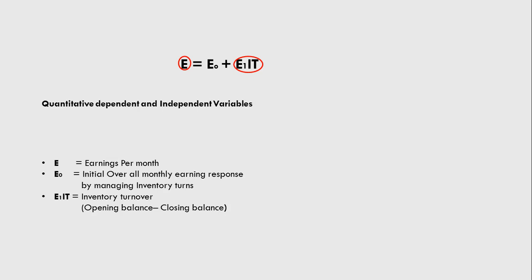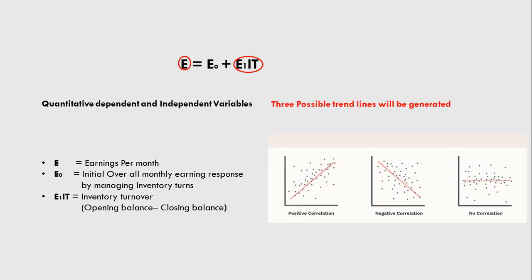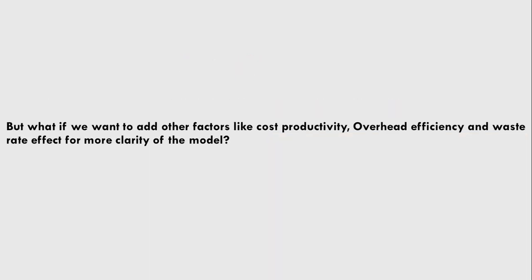E₁IT is basically inventory turnover. We can calculate turnover by negotiating opening balance and closing balance. We would have three expected trend lines: positively correlated, negatively correlated, or no correlation at all. But what if we want to add other factors like cost, productivity, overhead, efficiency, and waste rate effect? In that case, our simple model will be converted into factor analysis.